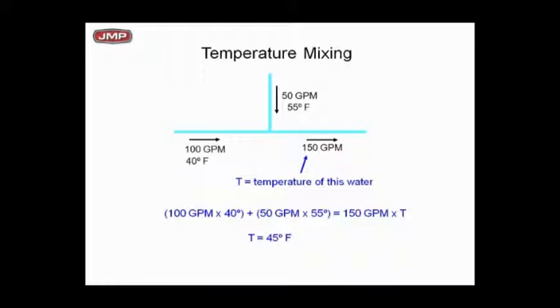This is probably the thing you need to spend a little time on because with chillers, you need to understand these blended temperatures and what happens. Real simple - if I got 100 GPM of 40 degree water mixing with 50 GPM of 55 degree water, I've got a total flow rate of 150 GPM leaving. So what will be the temperature? If you do the math here with a very basic formula, the temperature would become 45 degrees. You need to get comfortable making that calculation and being able to do it.